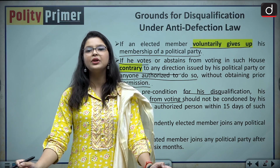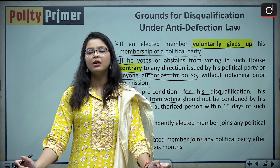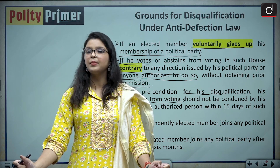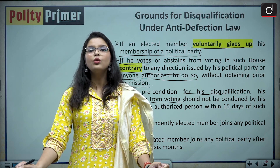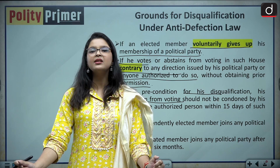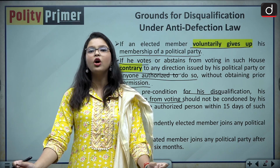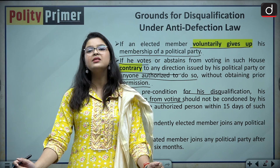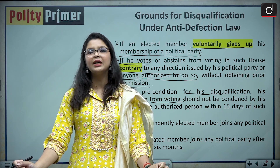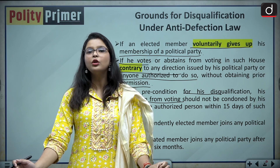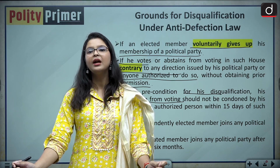For example, if there is a no-confidence motion pending in the Lok Sabha or a second reading of an important bill, and a member does not follow the party line or a three-line whip, he will be liable to be disqualified. However, an exception applies: disqualification will not occur if the member's abstention from voting is condoned by his political party or the whip. The third ground is if an independently elected member — one who contested without any party ticket — joins a political party after winning; he will be liable to be disqualified.